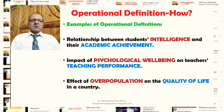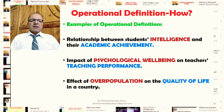The second example is the possible topic: impact of psychological wellbeing on teachers' teaching performance. Again, psychological wellbeing has multiple factors and may have been defined in several ways. Similarly, teaching performance can be analyzed or defined in several ways. The reader needs to know in what ways the researcher has conceptualized psychological wellbeing in their particular study, and similarly in what ways they have defined and operationalized teaching performance in the particular context.